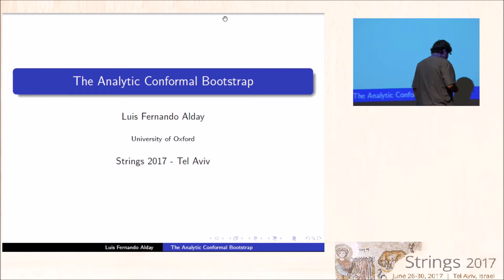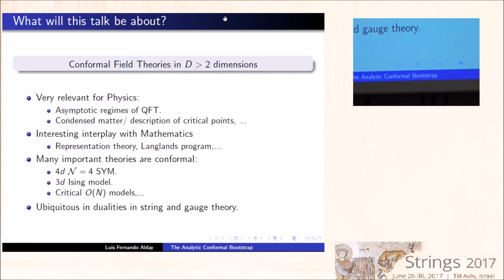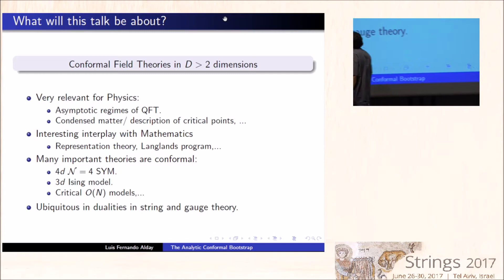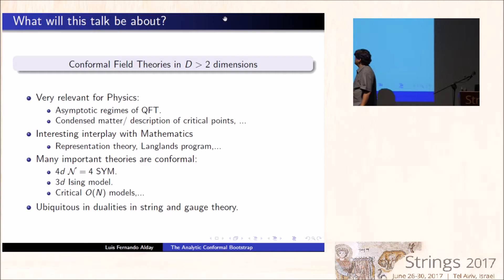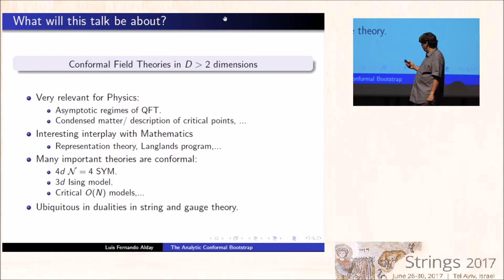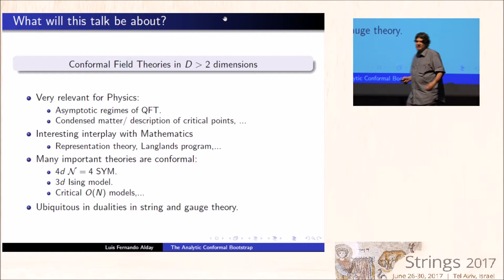This talk will be about conformal field theories in dimensions higher than two. There are many reasons to study conformal field theories. They are very relevant for physics — they enter in the asymptotic regimes of QFT, and also in condensed matter in the description of critical points. They have a very beautiful interplay with mathematics through representation theory and the Langlands program. Many important theories are conformal, like N=4 super Yang-Mills, the 3D Ising model, critical O(N) models, and they appear everywhere in dualities in string theory.